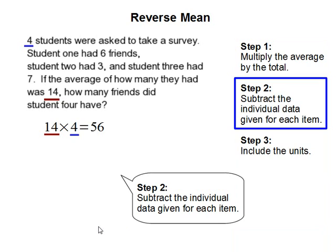Step 2: Subtract the individual data given for each item. So to find how many friends student 4 has, we're going to subtract the friends for student 1, which is 6, then the friend for student 2, which is 3, then the amount of friends for student 3, which is 7. And 56 subtract 6, 3, and 7 gets you 40.